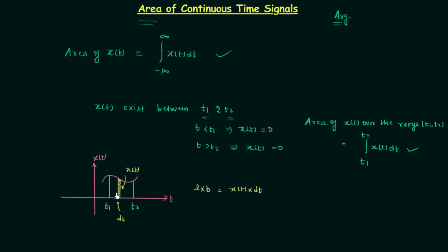We can divide the whole area from t1 to t2 into n number of different rectangles, and the summation of the areas of these rectangles gives us the total area between t1 and t2. Since the summation of infinitely small areas is the integration, the total area A equals the integration from t1 to t2 of x(t) dt.